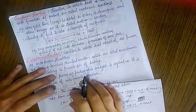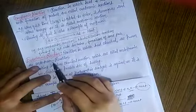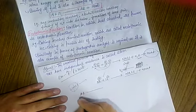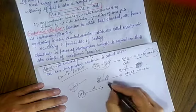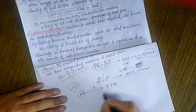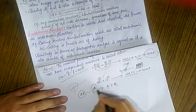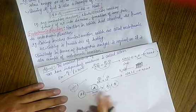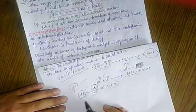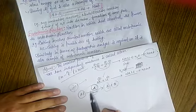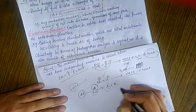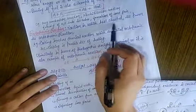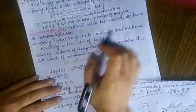Next, endothermic reactions. What is an endothermic reaction? A reaction in which heat is absorbed is known as an endothermic reaction. For example, if you have an AB molecule and you need to break it into A plus B, heat must be absorbed to break the bond. These are known as endothermic reactions.